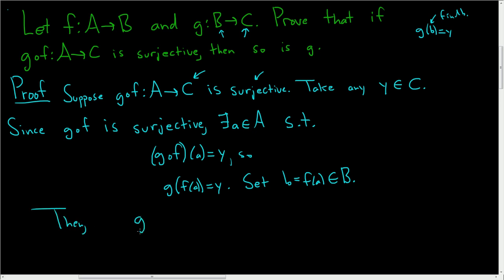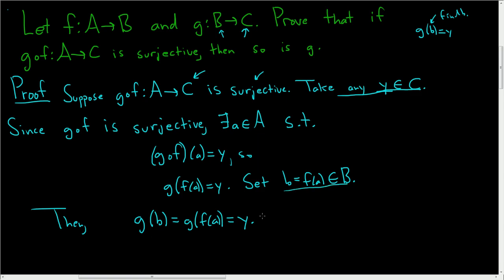Then little g of b — well, that's little g of f of a, and we know that that's equal to y. So we started with some arbitrary y; we said take any y in capital C, and we found an element little b in capital B such that g of little b is equal to y. That's exactly what it means for little g to be a surjection. Therefore, g is surjective. And that's the proof. I hope this helps.